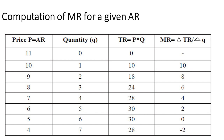The schedule shows that the marginal revenue decreases more drastically than average revenue. That is why marginal revenue is lower than average revenue. So we can say that the demand curve or average revenue is downward sloping, and more output can be produced only when price is reduced. As a result, the revenue generated from every additional unit, i.e. marginal revenue, is less than the price or average revenue of the product.